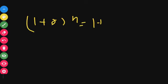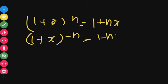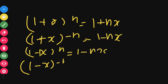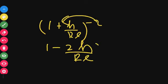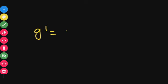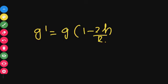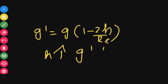So the concept is: using binomial expansion, (1+x)^n = 1 + nx; (1+x)^(-n) = 1 - nx; (1-x)^n = 1 - nx; (1-x)^(-n) = 1 + nx. Applying this, (1 + H/Re)^(-2) = 1 - 2H/Re. So the acceleration due to gravity value is g' = g(1 - 2H/Re), and as height increases, acceleration due to gravity decreases. This is all about the variation of g with altitude.